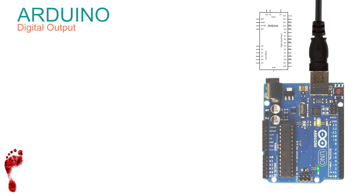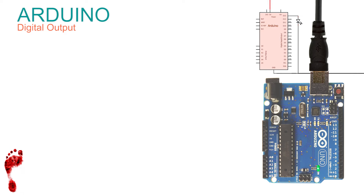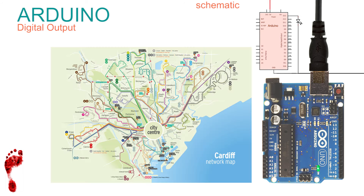Digital output — done. We could draw this circuit quickly for our notes. Here is the Arduino with its pins; the power supply is shown as red for positive (5V) and black for ground (0V). The yellow LED on the board has this symbol and is connected to pin 13. This type of drawing is called a schematic — a simplified way of displaying the important parts of a complex system.